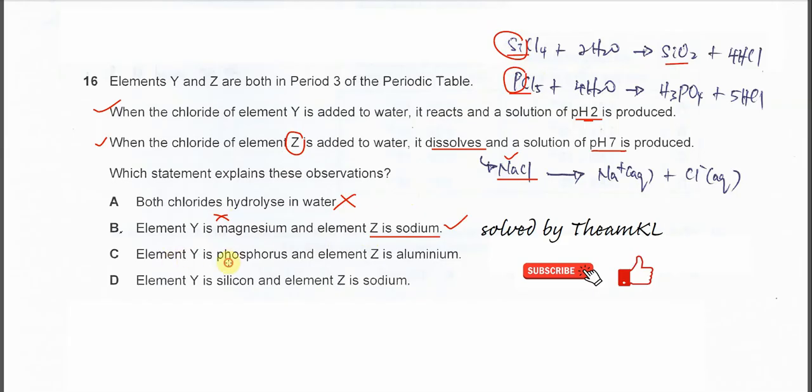For C, element Y is phosphorus and element Z is aluminum. So Z should be sodium. Therefore, this one is not the answer.